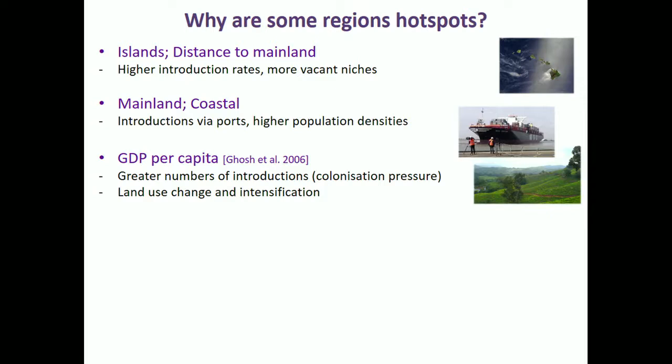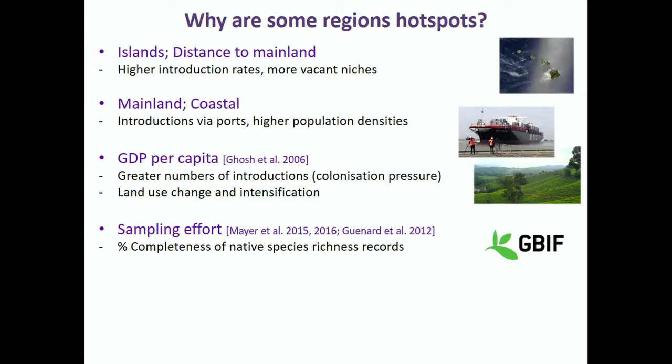Sampling effort might be important — in the UK and North America we're particularly good at systematically surveying native species. High completeness of native species inventories based on the Global Biodiversity Information Facility may also indicate we're good at recording alien species. Mean annual temperature and precipitation might also be important drivers of alien species richness.